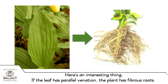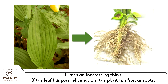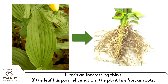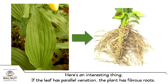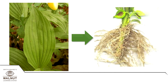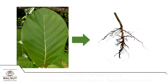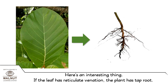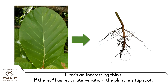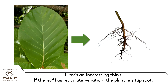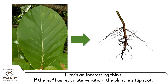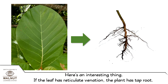If the leaf has parallel venation, the plant has fibrous roots. If the leaf has reticulate venation, the plant has a tap root.